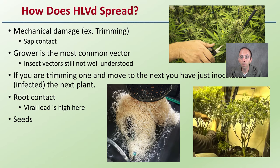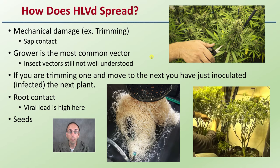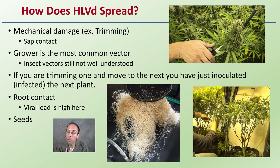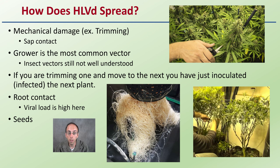How does hop latent viroid spread? Mechanical damage, such as trimming — the sap contact is actually what causes that viroid to be transmitted. That results in the grower being the most common vector. Insect vectors are possible, but at this time they're not really well understood. If you are a grower trimming from one plant and move to another, you've essentially inoculated or infected the next plant.